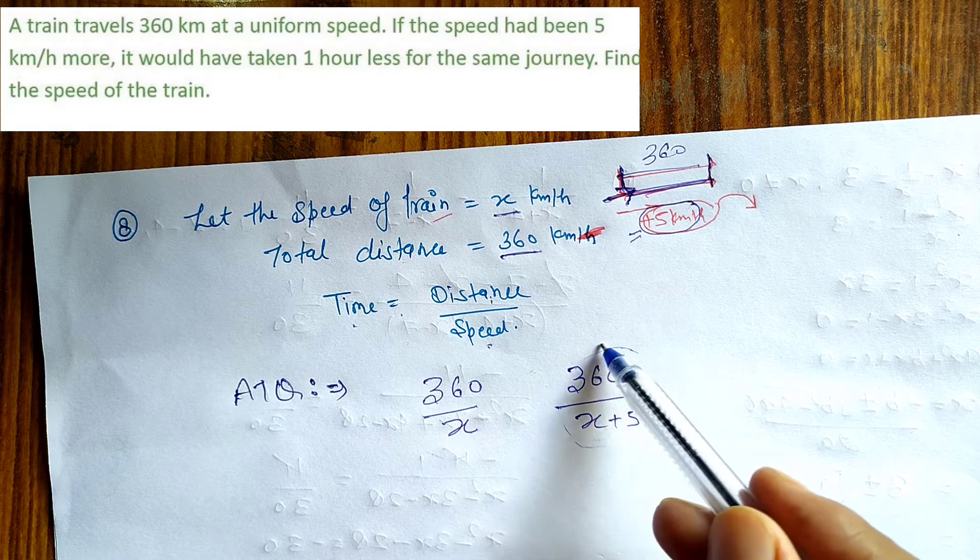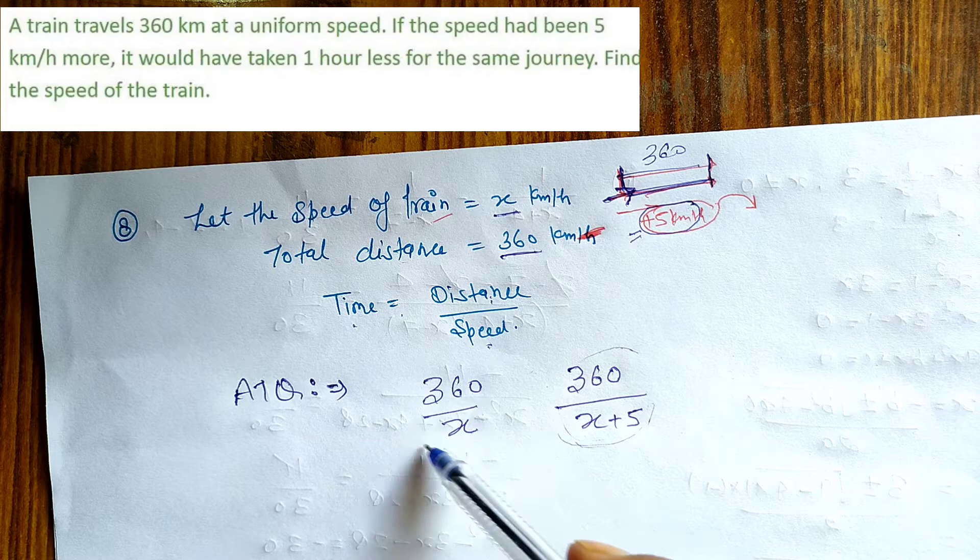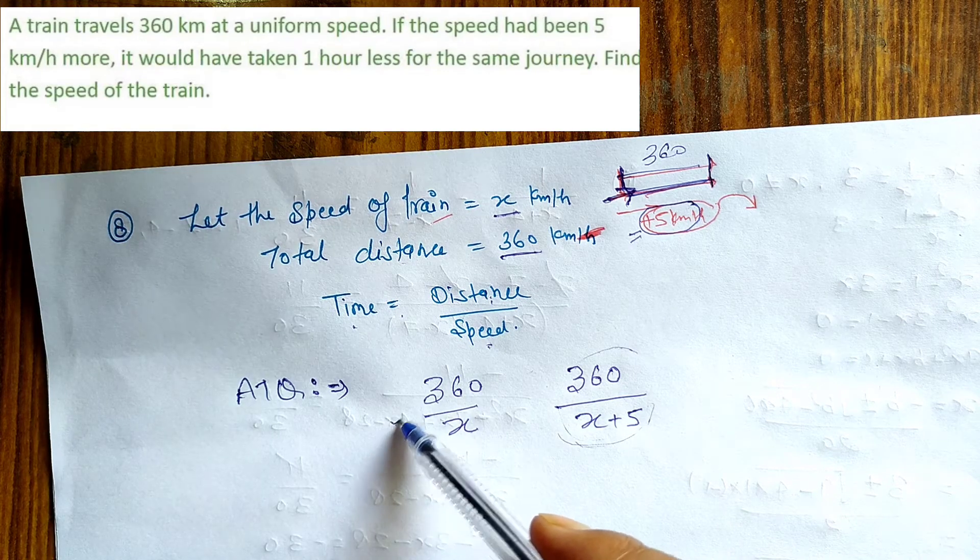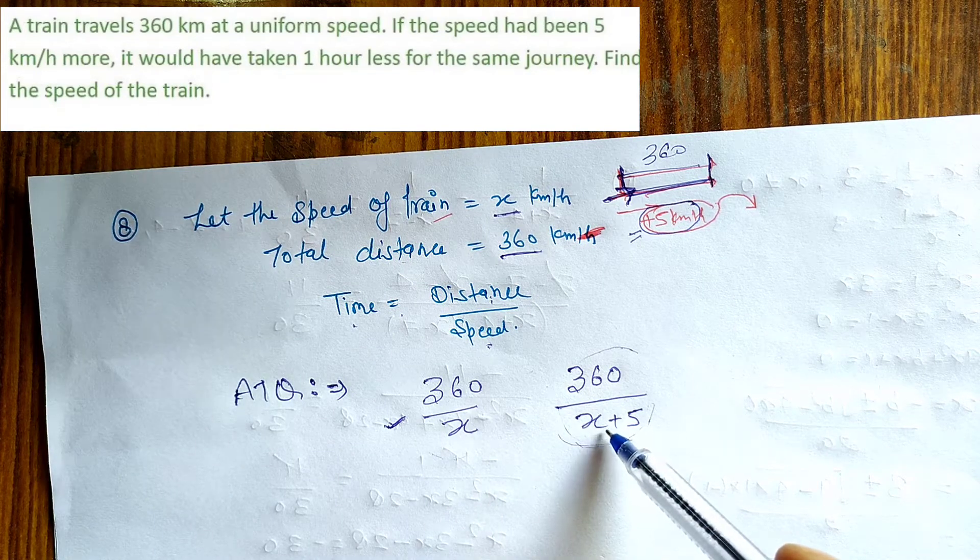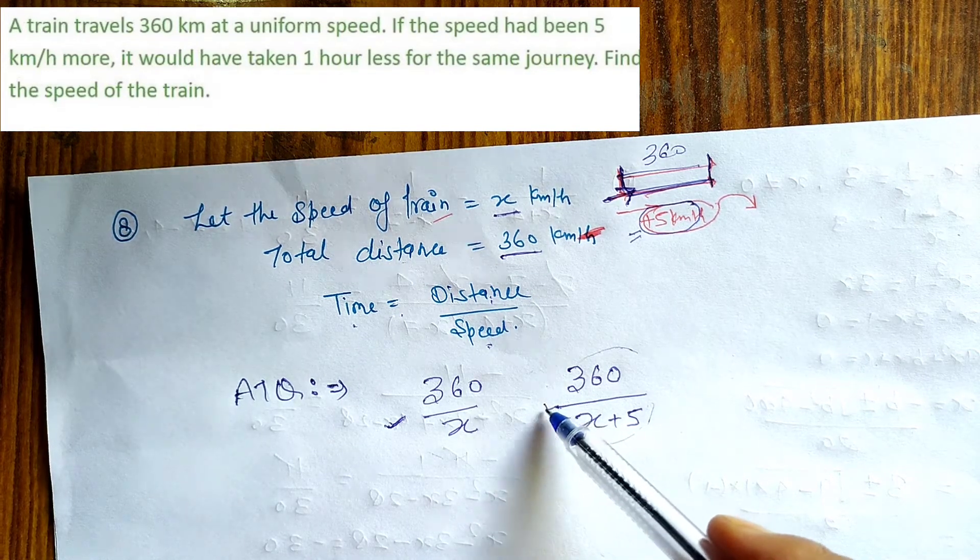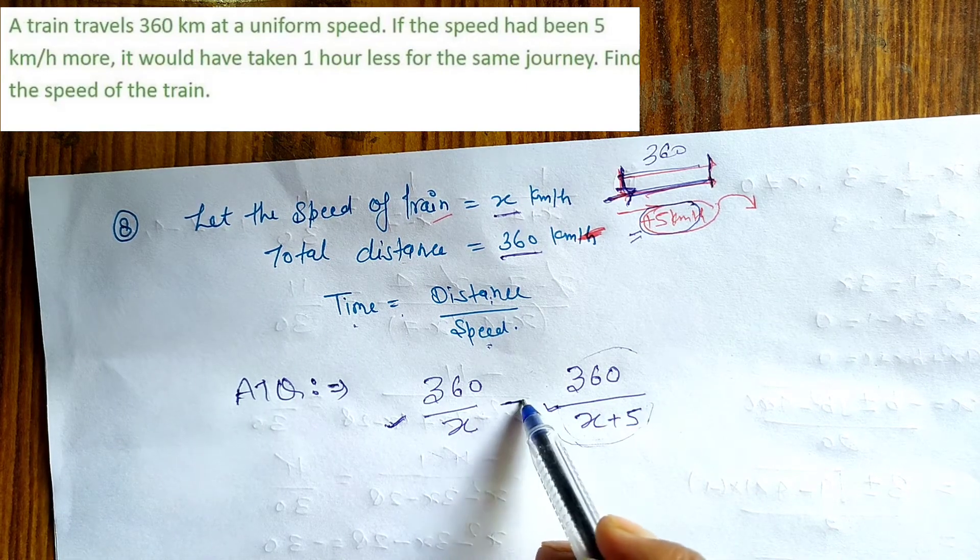Ye speed badhe aur ye total time. Jaise speed badhe, time kam hoga. Simple se baat hai, so ye value kam hogi is se, iske mukable, iske comparison. Usne kya bola ki jaise pehle usne time laga us journey ko complete karne mein, aur jo 5 km per hour speed badhane ke baad jaise time laga usne complete karne mein, uska difference kitna hai?